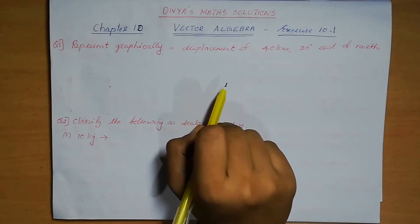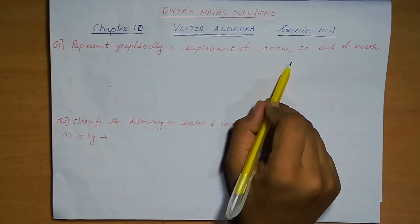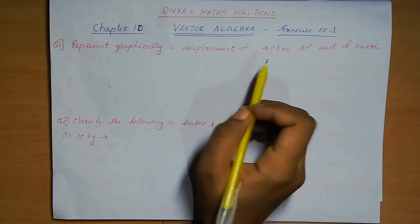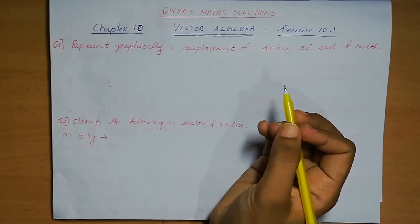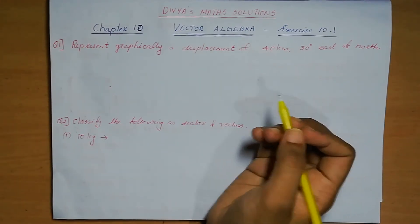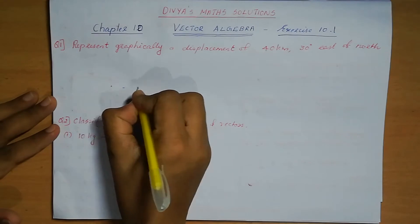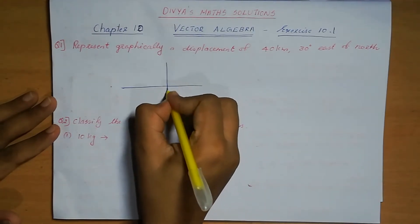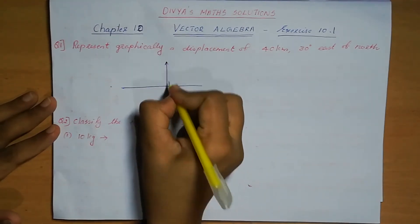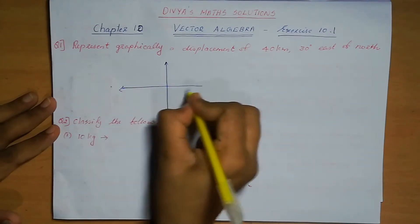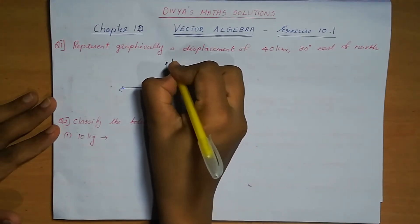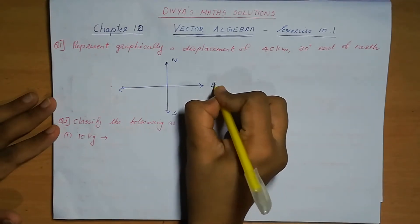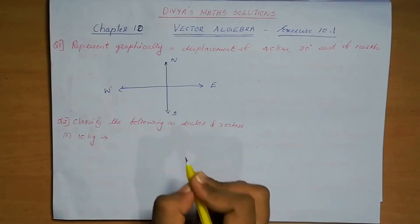Represent graphically a displacement of 40 km, 30 degrees east of north. So what we need to do? First we can draw north, south, east and west. We can mark north, south, east and west.